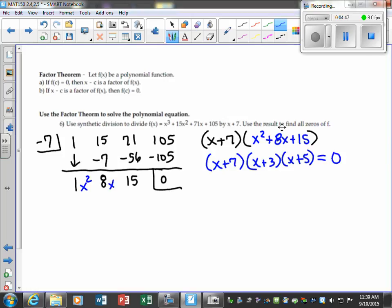We're looking for the zeros. So when we set this equal to zero, when you set this one equal to zero, what do you get? Negative 7. Good. What do you get here? Negative 3. And what about here? Yes, so your zeros you would just list as negative 7, negative 3, negative 5.